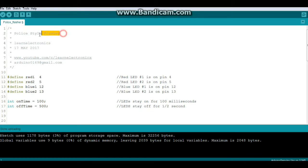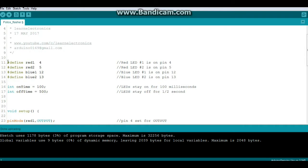All right, here's our code for the police style flasher. First we're going to do some defines. We're going to say red1 is equal to 4, red2 is equal to 5, blue1 is equal to 12, and blue2 is equal to 13. So now when we refer to these LEDs we can just refer to them by name and we don't have to worry about pin numbers. Next, a couple of variables. They're integer variables which means they are whole numbers.